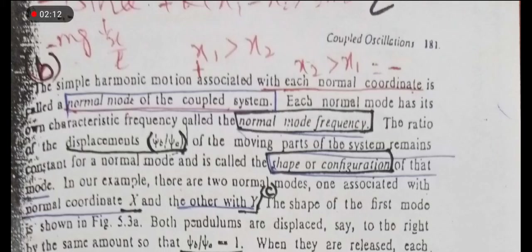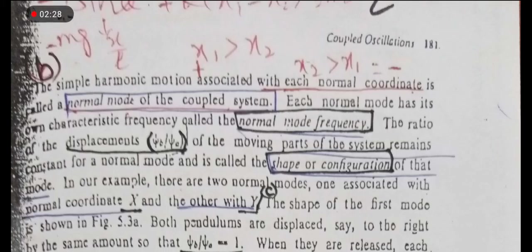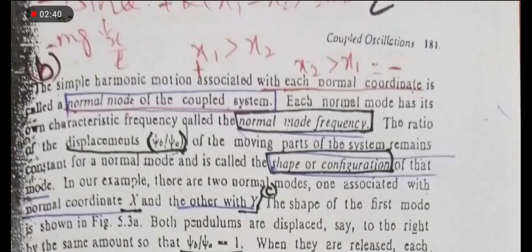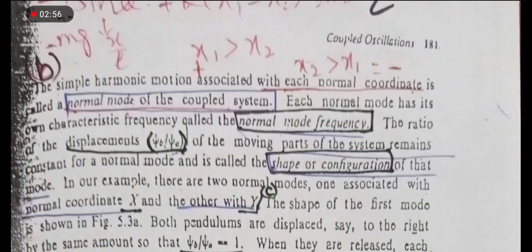The simple harmonic motion associated with each normal coordinate is called the normal mode of the coupled system. This normal mode has its own characteristic frequency called the normal mode frequency. The ratio of the moving parts of the system remains constant for the normal mode, and this is called the shape of configuration.